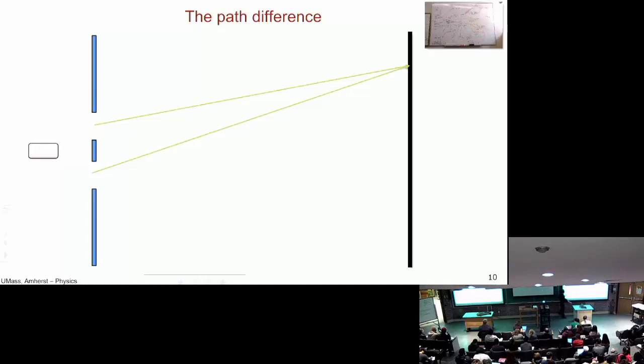If we look at it, the top one travels about this far. The bottom one is going to have to go this extra little bit. This bottom ray has to travel an extra little bit of distance to get to that point because it starts further away. We're still looking at those differences in path length.